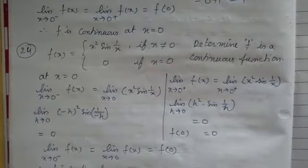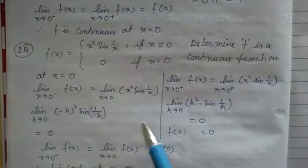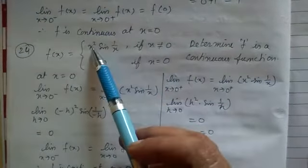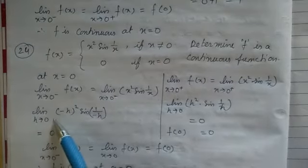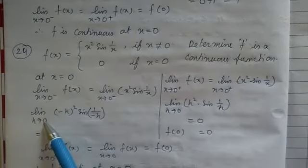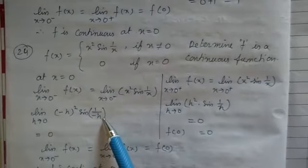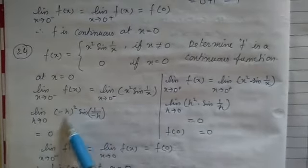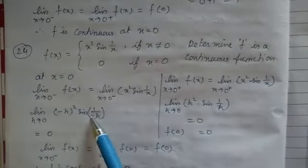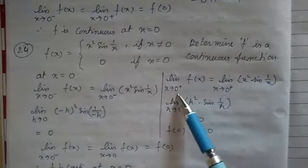At x = 0, we check: limit x tends to 0 of f(x). For the left-hand limit, x tends to 0⁻, so we substitute x = 0−h (h tends to 0). It becomes (−h)²·sin(1/(−h)) = h²·sin(−1/h). Putting h = 0, we get 0² times whatever follows, which equals 0. So the left-hand limit is 0.